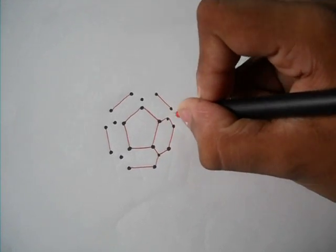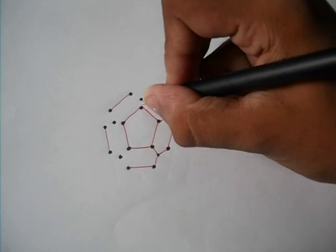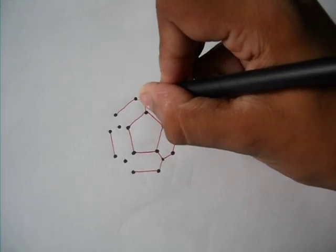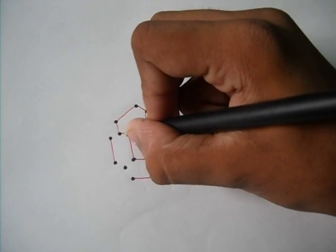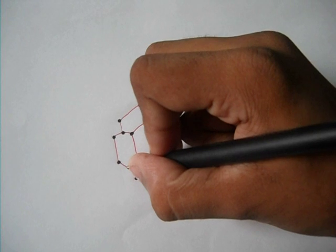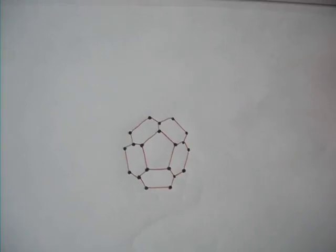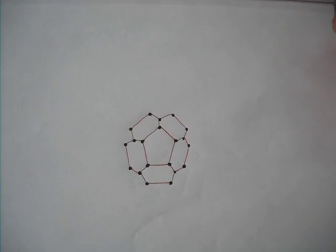You will be seeing that we will be getting hexagonal structure. Yes, okay. There we have 5 hexagons bordering our pentagon.